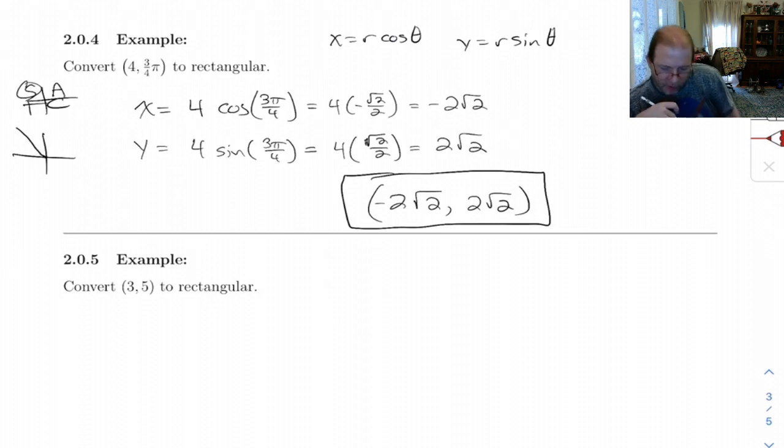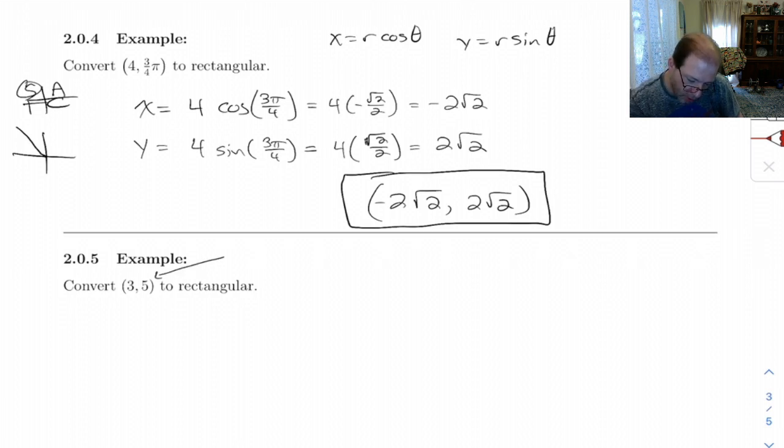All right. This next one, convert 3 pi to rectangular. Now, these are polar coordinates. And the only reason I know that is because of the context. If I just gave you this as a problem, I would probably have to tell you these are polar coordinates. Convert them to rectangular.